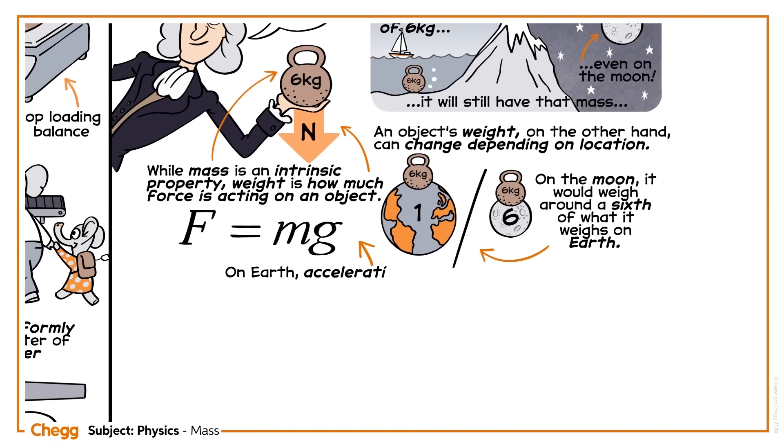On Earth, acceleration due to gravity is equal to 9.807 metres per second squared.